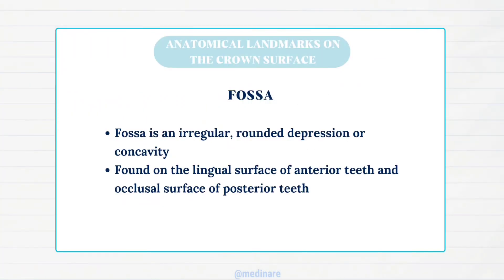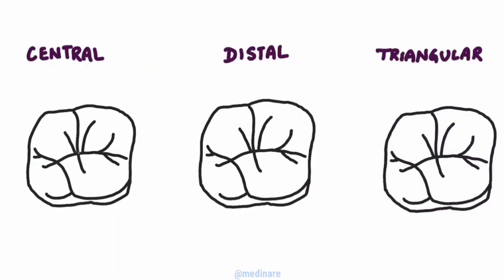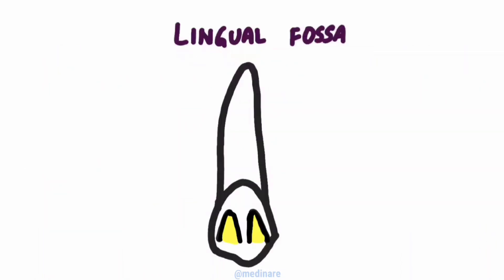Fossa is an irregular rounded depression or concavity found on the lingual surface of anterior teeth and the occlusal surface of posterior teeth. The convergence of ridges and junctions of grooves form the fossa in posterior teeth. Types include: lingual fossa, central fossa, distal fossa, and triangular fossa. The central fossa is the major fossa on the occlusal surface of molars. The distal fossa is found distal to the oblique ridge on the occlusal surface of maxillary molars. The triangular fossa is a minor fossa found mesial and distal to the marginal ridges. The lingual fossa is found on the lingual surface of anterior teeth.